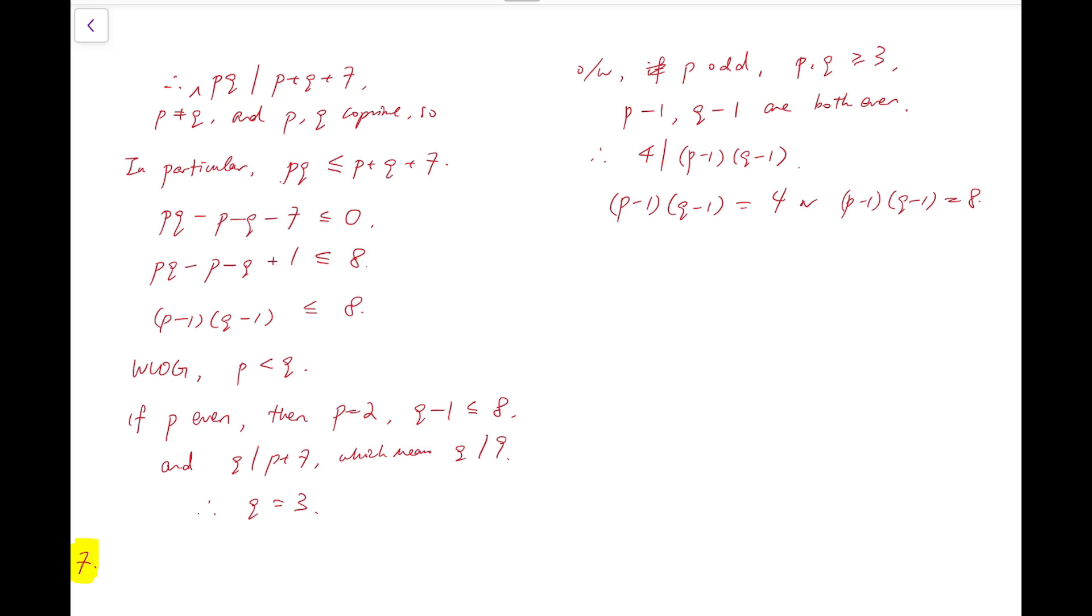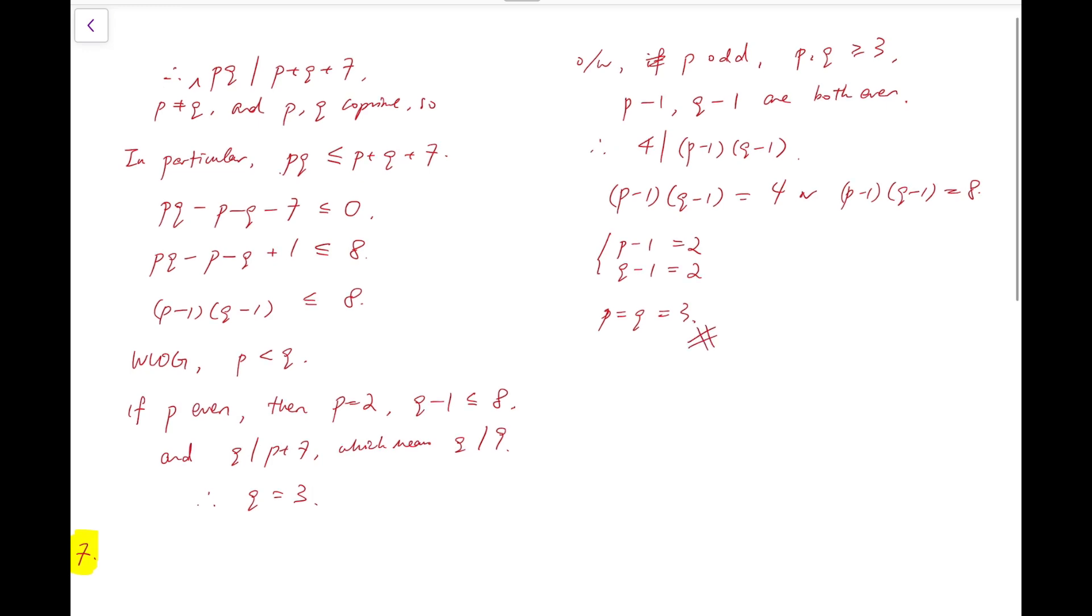The first case means that p minus 1 is equal to 2, and q minus 1 equals 2. So that means p equals q equals 3. But that is not true, because p and q are not equal. So that's a contradiction. And the other case is that p minus 1 equals 2, and q minus 1 equals 4. So that means p equals 3, and q equals 5.